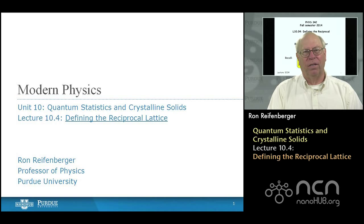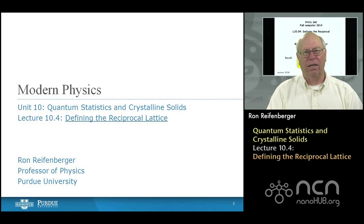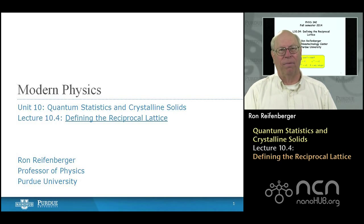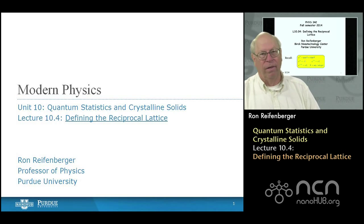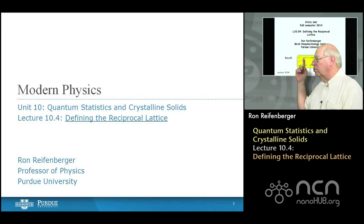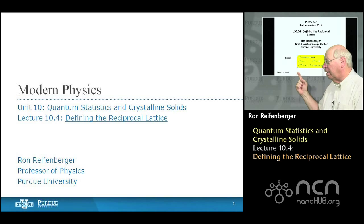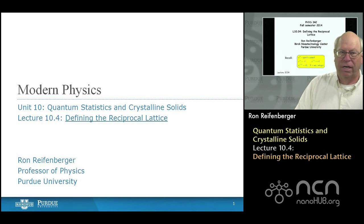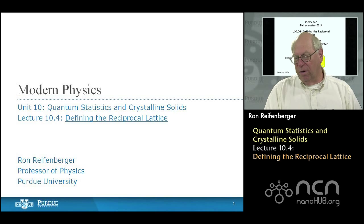The reciprocal lattice is an important concept in condensed matter physics. Anytime you have a solid where all the atoms are periodically located in space, the definition of this reciprocal lattice turns out to be very useful. The sole purpose of this lecture is to introduce you to this concept so you have some fundamental understanding of what it accomplishes. This lecture will use Euler's theorem extensively — in particular, the identity that e raised to 2π times an integer times i is always equal to plus 1.